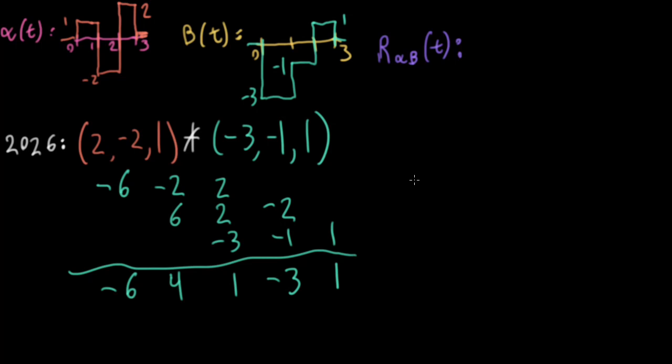So I'll have minus 6, 6, and then minus 3. For the next row, multiplying by minus 1. So that's just flipping the signs on the sequence. So I'll have minus 2 2 minus 1. And then I'll multiply everything by 1. So that's just the sequence. So I've got 2 minus 2 1. And adding up the columns, I'll have minus 6, 4, 1 minus 3, and 1. So I can take these numbers and plot them up here.